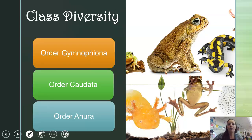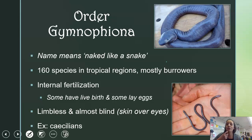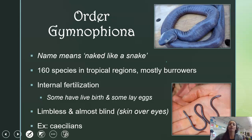There are three different orders of amphibians. First is Order Gymnophiona, which means naked like a snake. They look very snake-like but are amphibians. They are limbless, rely on water for their eggs and moisture to survive, and are nearly blind because they typically live in burrows. The example here is caecilians.